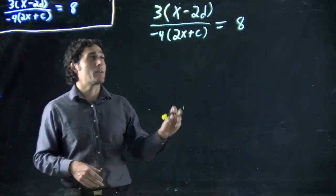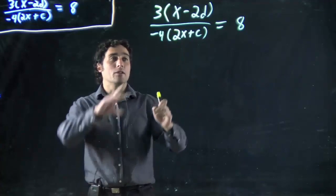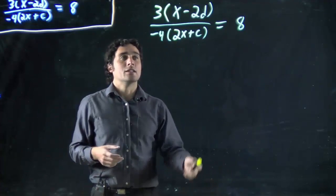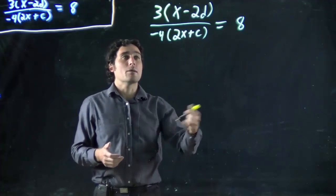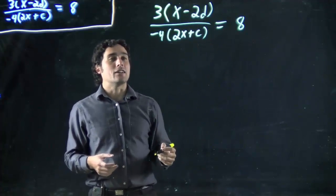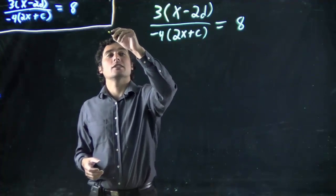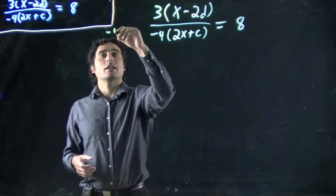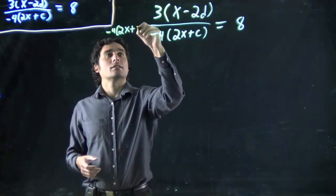We looked at before being able to try and invert things when we have a variable on the bottom. In this case it won't work. We have variables on top, bottom, we invert it, we still have a variable on the bottom. So we're going to have to get rid of all of this on the bottom. Well, remember, it's dividing everything else, so if we want to get rid of it, we multiply by this. So I'm going to multiply by minus 4 times 2x plus c.